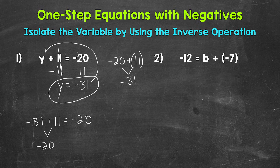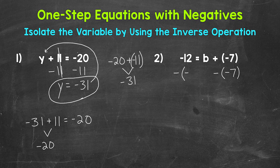Let's move on to number two, where we have negative 12 equals b plus negative 7. We need to isolate that variable of b. Negative 7 is being added to b, so we need to undo that addition by using the inverse operation. Let's subtract negative 7 from the right side. Whatever we do to one side of the equation, we must do to the other, so let's subtract negative 7 from the left side as well. On the right side, we are adding a negative 7 and subtracting a negative 7 — these negative 7s are going to cancel out and equal 0.